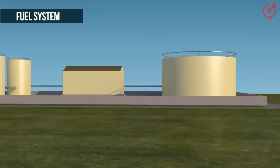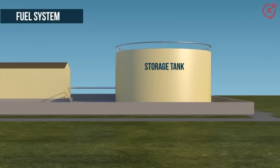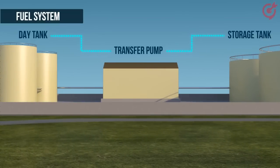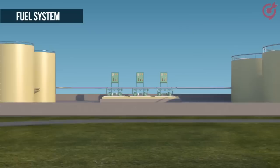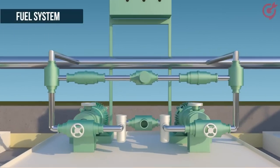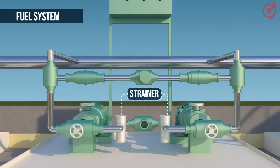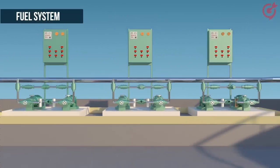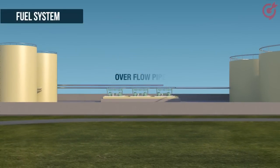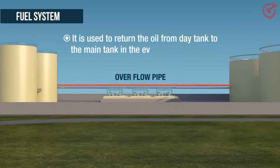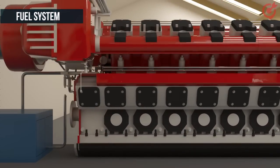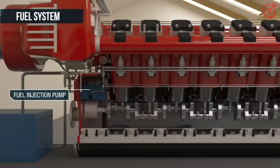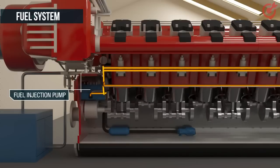The fuel system consists of a storage tank, or main tank, to store the fuel. The oil is pumped into the day tank via a transfer pump. During the transfer, oil passes through strainers or filters to remove solid impurities. An overflow pipe connects the day tank to the main tank, returning oil from the day tank to the main tank in the event of overflow. The fuel injection pump injects fuel from the day tank into the engine cylinder at a high pressure of about 100 bars.